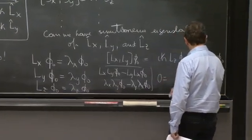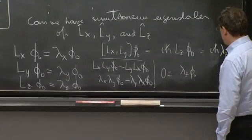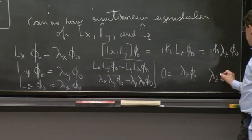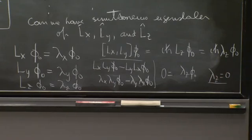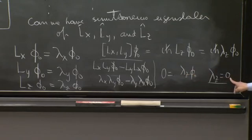0 is equal to lambda z phi naught. So you get that lambda z must be 0. If you have a non-trivial state, lambda z should be 0.